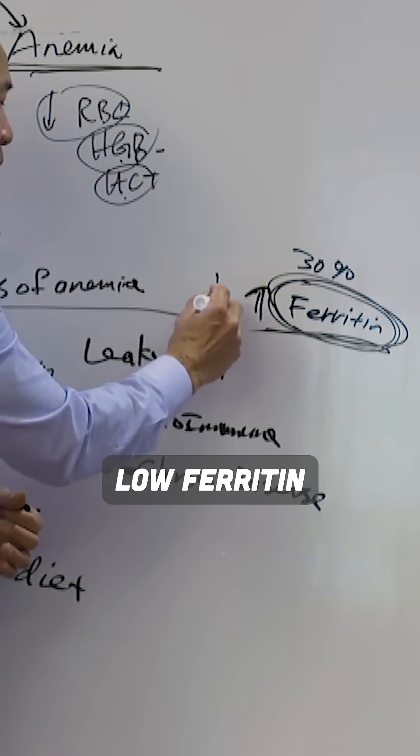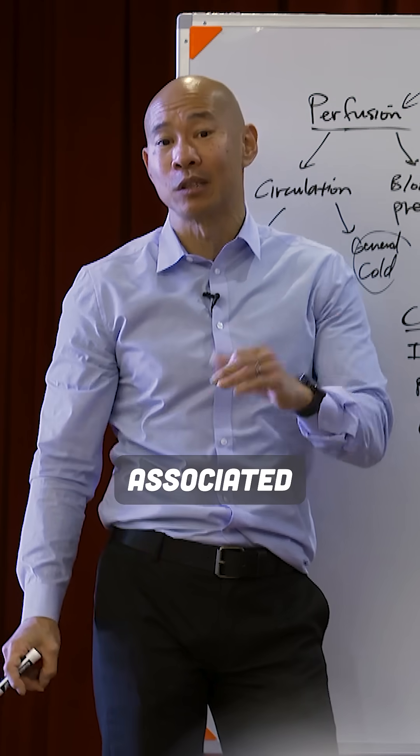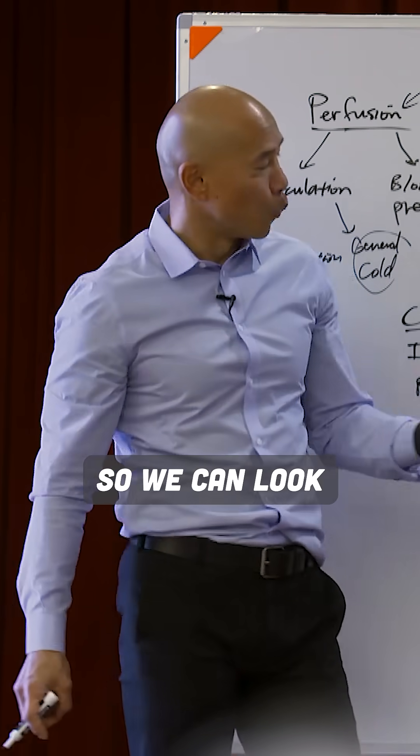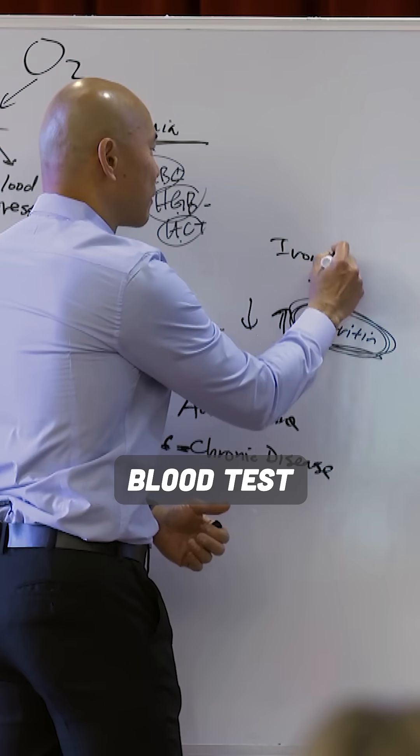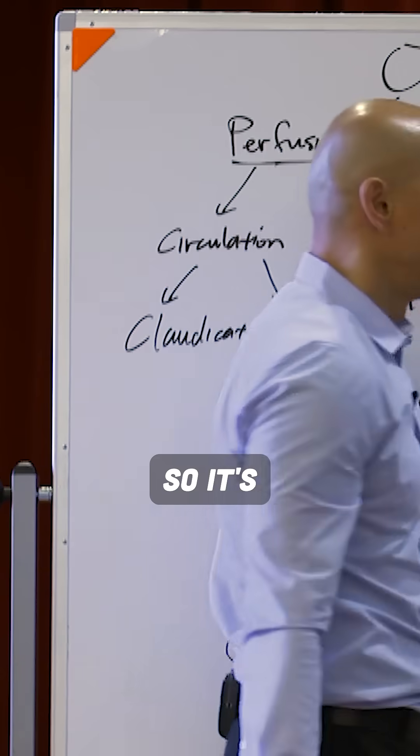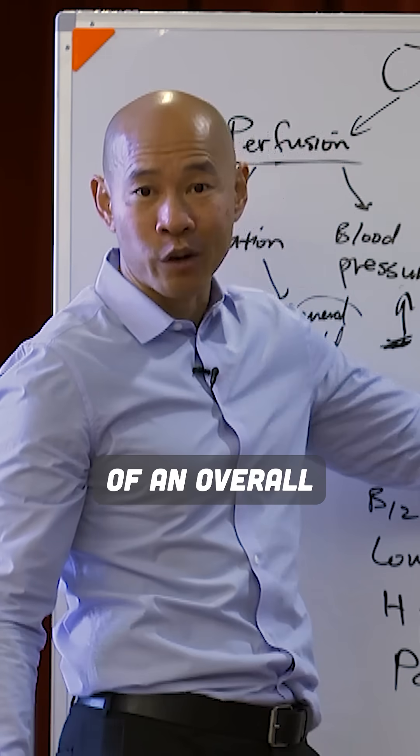Now if you have low ferritin, that means you have low iron storage, typically associated with iron deficiency. We can look at the ferritin along with the iron number, because the iron number on your blood test makes up only 1% of all the iron. So it's actually not the best indicator of overall iron level.